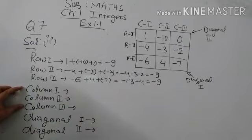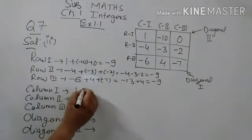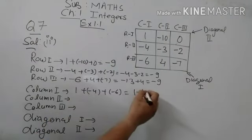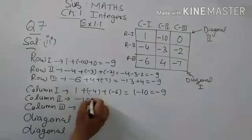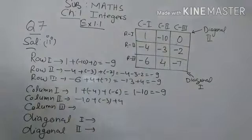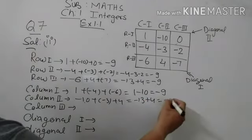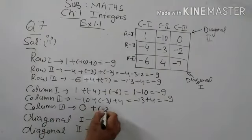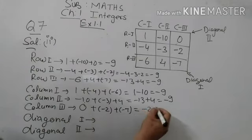Now we find the values of each column. For column one: 1 plus minus 4 plus minus 6 equals minus 10, and minus 10 plus 1 gives minus 9. For column two: minus 10 plus minus 3 plus 4 equals minus 13 plus 4, which is minus 9. For column three: 0 plus minus 2 plus minus 7 equals minus 9. All three columns sum to minus 9.